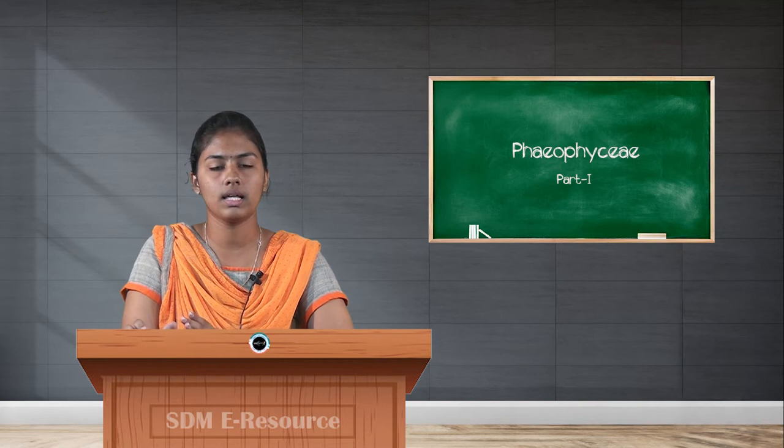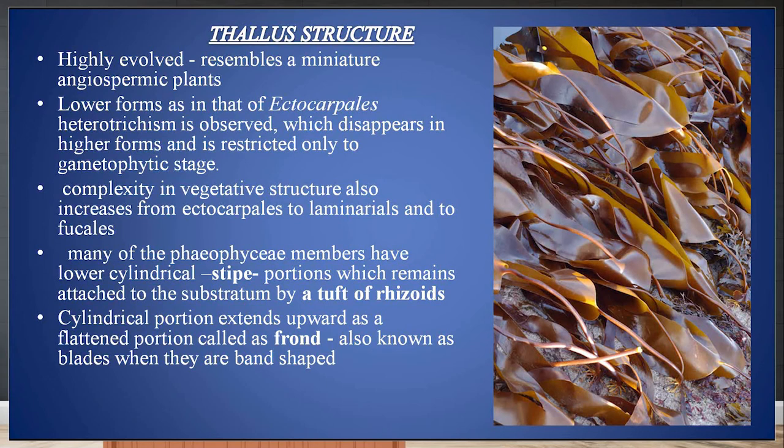Heterotrichism, in the sense, means if you consider these Phaeophyceae members, a few of these types will be growing vertically to the region where they are attached, and some of them will be growing horizontal to the substratum.